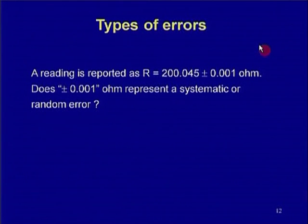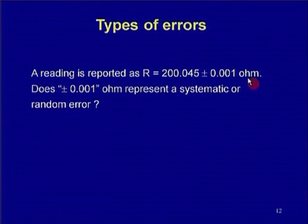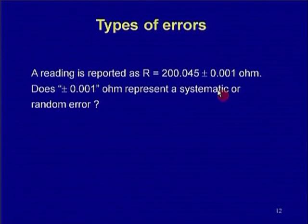Often readings are reported as a value plus or minus some quantity — for example, a resistance reading of some value plus or minus 0.001 ohm. The question for you as an assignment: does this plus or minus 0.001 ohm represent systematic or random error? After completing this section on experimental skills, you will be asked to give the answer, so please be ready.